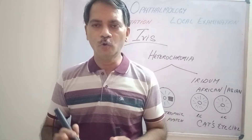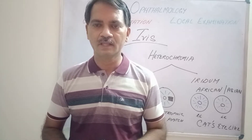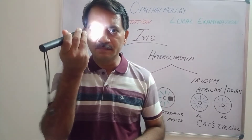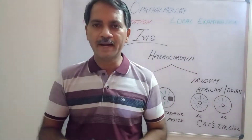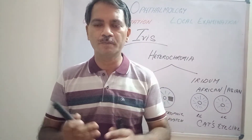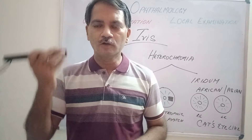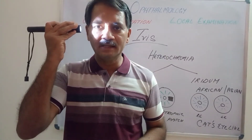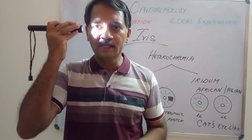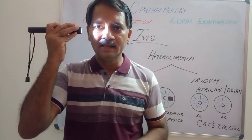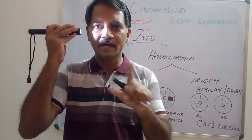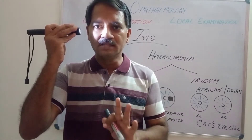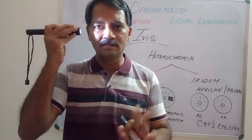Let us see how to examine the iris. If you put the light from the front, sometimes the color and pattern of the iris may not be so clear. It is always better to put the light from an angle on the temporal side so that you can see clearly the color and pattern of the iris all 360 degrees. This is how it is better to appreciate the iris.